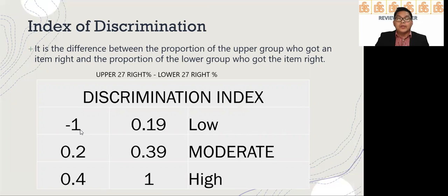This is our discrimination index: negative 1 to 0.19 is low, 0.2 to 0.39 is moderate, and 0.4 to 1 is high. That means if your discrimination index is between 0.1 to 0.19, it is low, and then 0.2 to 0.39 is moderate, 0.4 to 1 is high.